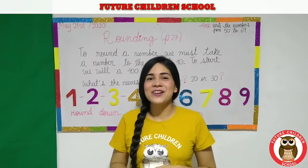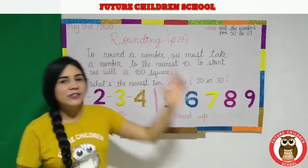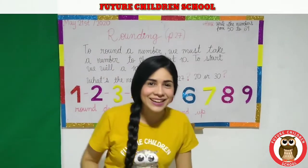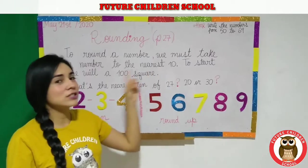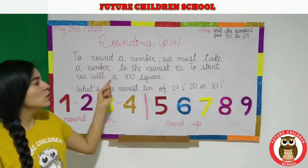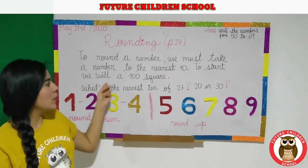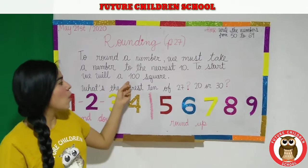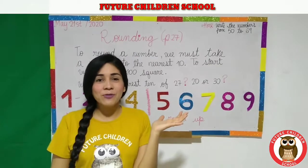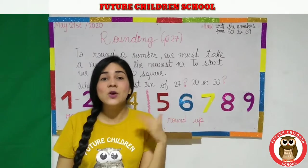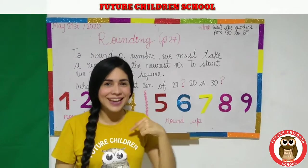And today we are going to see rounding. What is rounding? To round a number, we must take a number to the nearest 10. To start, we will use a 100 square, okay? If you want to use it, this is going to help you. And we are going to use it today.